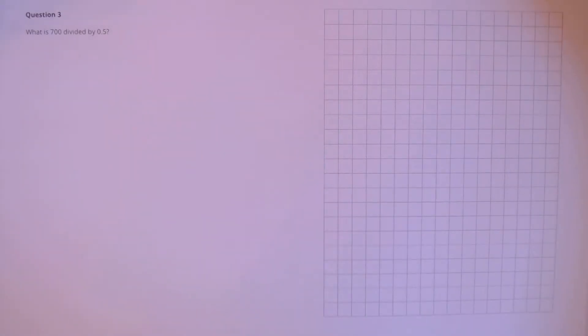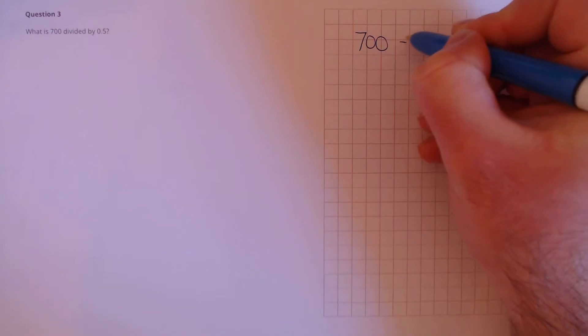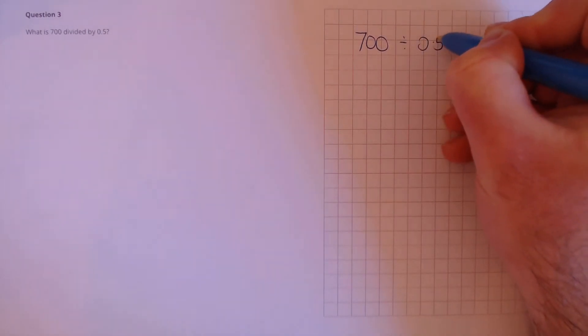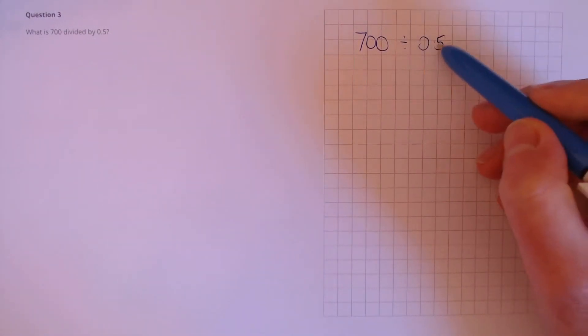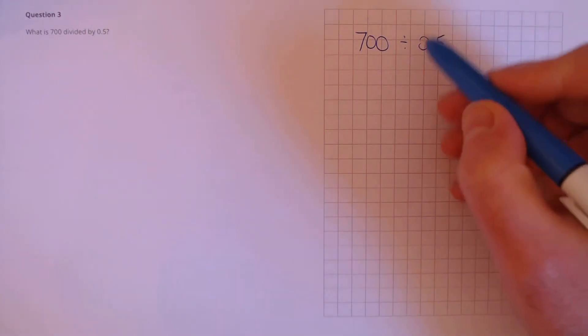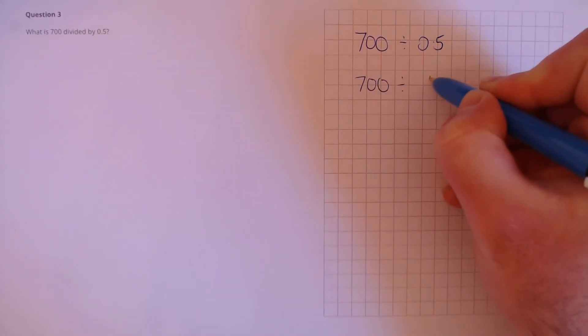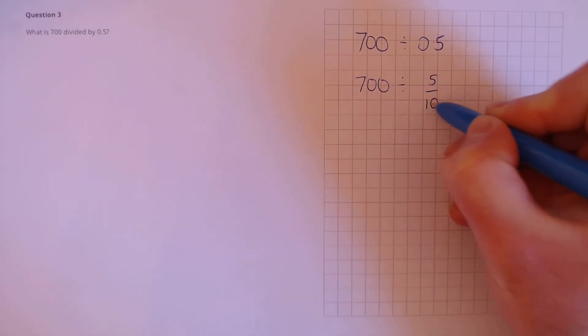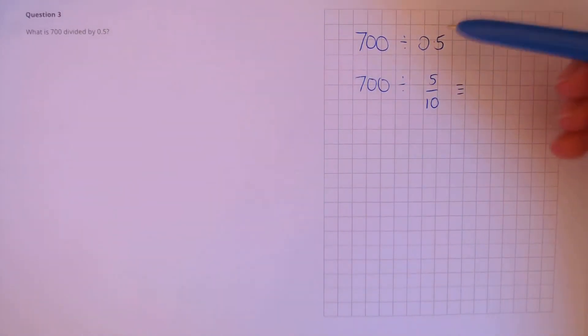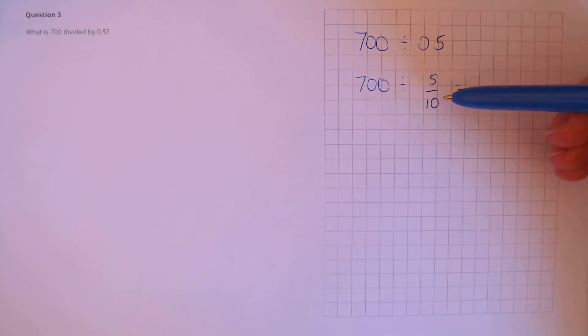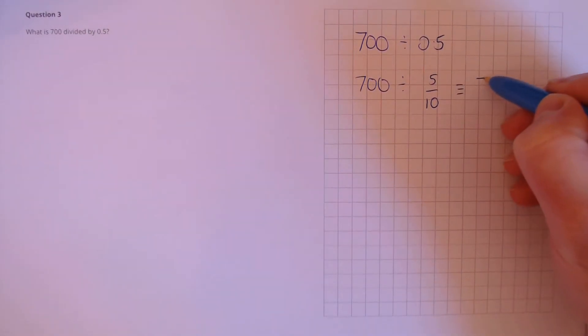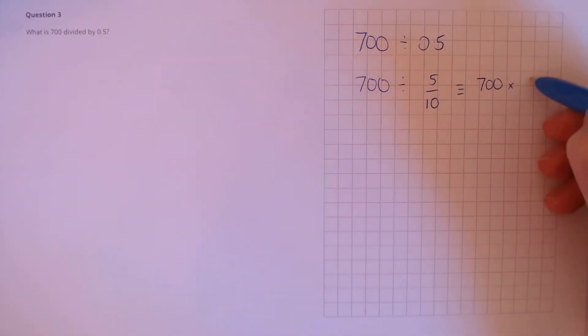Question 3. What is 700 divided by 0.5? 700 divided by 0.5. To write this as a fraction, we'll make it a lot simpler for us. So 700 divided by 5 over 10. If we divide by a fraction, we can also write that as multiplying by that same fraction, but the other way up. So that's 10 over 5.